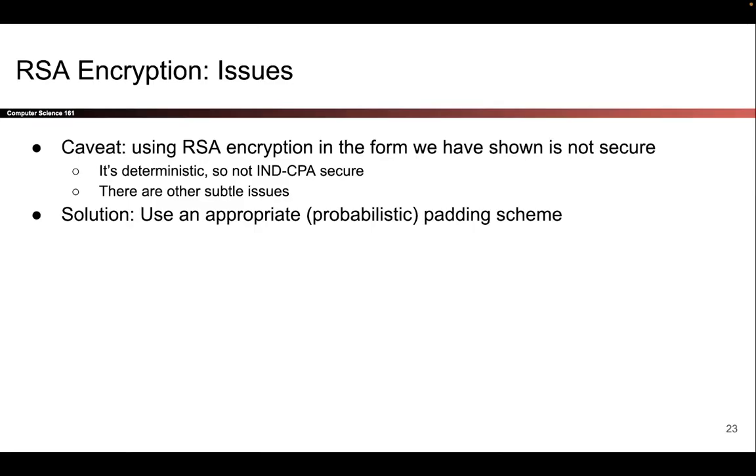Now, before you go out and start using RSA encryption in the real world, one warning is that the RSA encryption we have presented is not quite secure. One clear reason for why it's not secure is it's deterministic. At no point did we use any randomness. So if you encrypt something twice using the scheme that we have presented, you will get the same output and that breaks IND-CPA security. There are also some other very subtle issues that we will not touch on.